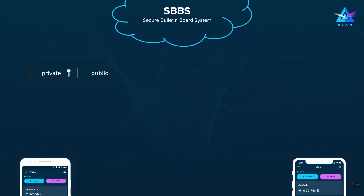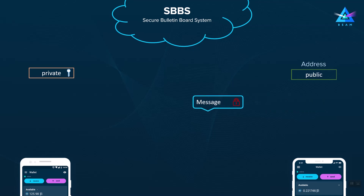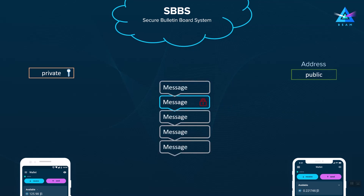The process starts with the creation of a private and public key pair. The public part is called an address and it is sent to the other wallet using any third-party channel. This address is then used to sign a message, encrypt it, and send it to the SBBS message pool, where it is combined together with other messages.